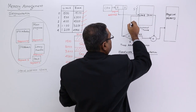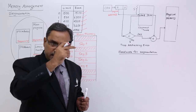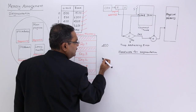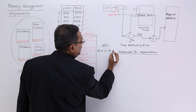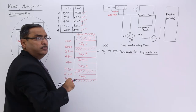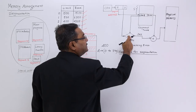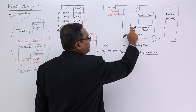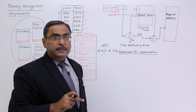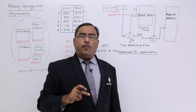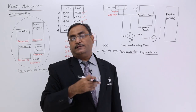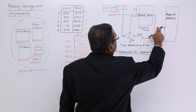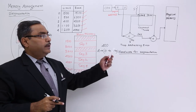The limit means the size of the segment, and D means displacement. The limit must be greater than the displacement. For example, if the limit is 400, then the displacement can range from 0 to 399 — displacement cannot be equal to or greater than the limit. If the displacement is less than the limit, then the base address plus the displacement gives the respective physical address, which is mapped onto physical memory. Otherwise, a trap addressing error occurs — trap being the highest priority non-maskable interrupt, meaning the operating system must give immediate attention to this emergency.